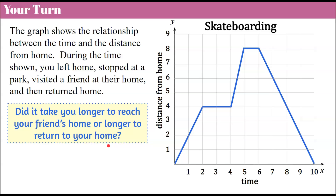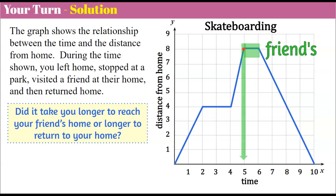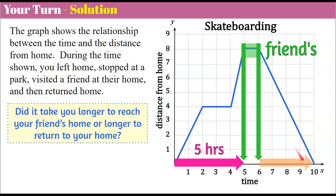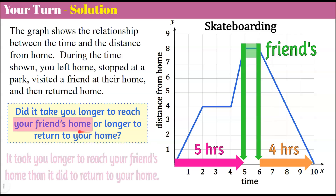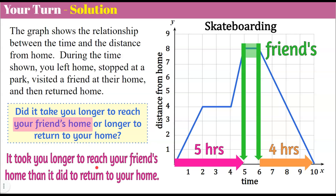Welcome back. We're going to talk about how long it took us to get to the friend's house. We got to the friend's house after five hours. Then we left the friend's house to go back home from six to ten — that's four hours to get home. So it took us longer to get to our friend's house, likely because we stopped at the park for two hours before we got there. Regardless, we took longer to reach our friend than we did to get back home.